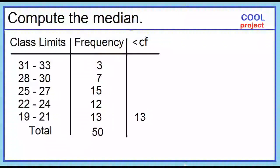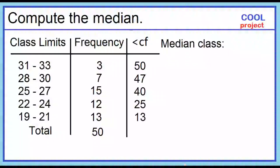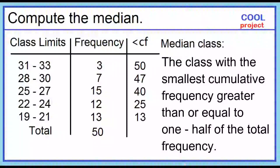The frequency of the lowest class interval is 13. 13 plus 12 is 25; 25 plus 15 is 40; 40 plus 7 is 47; 47 plus 3 is 50. Using this cumulative frequency distribution, we can identify the median class. The median class is the class with the smallest cumulative frequency greater than or equal to one-half of the total frequency.